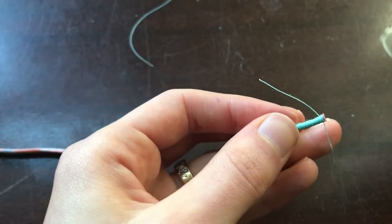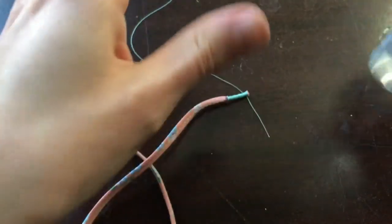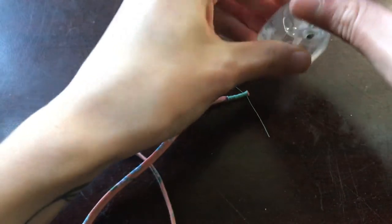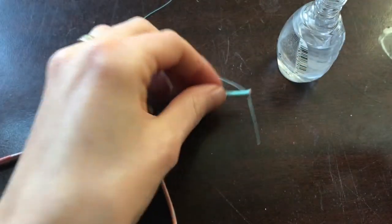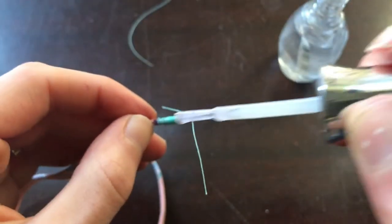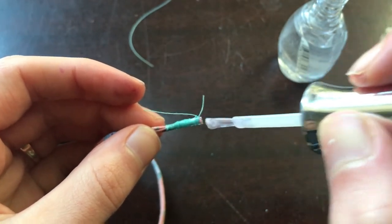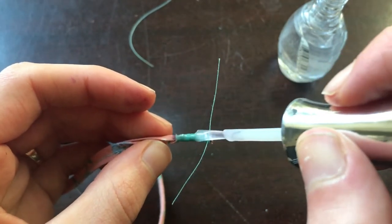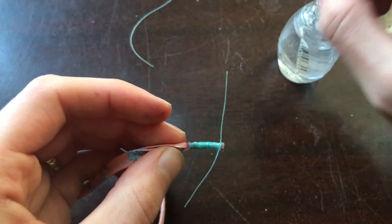And now we're going to take our clear nail polish and generously paint it onto the thread. Make sure you completely cover all of the threads and also put a good amount on the end.